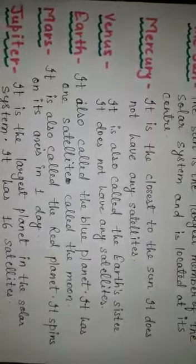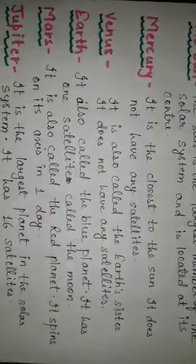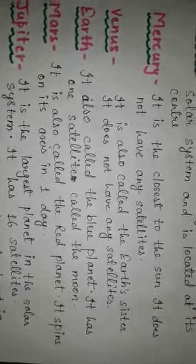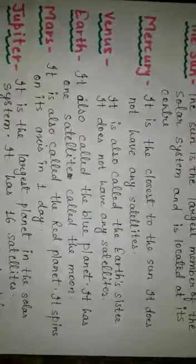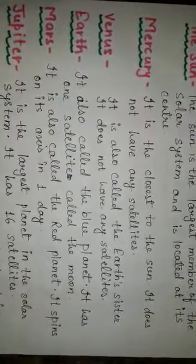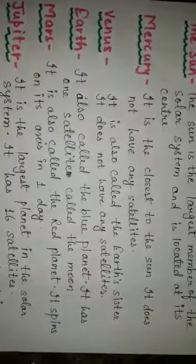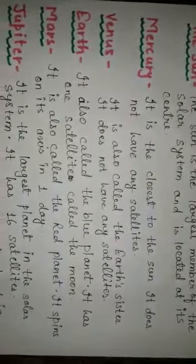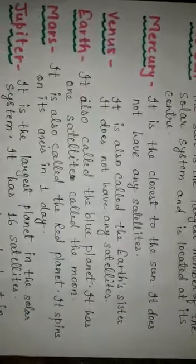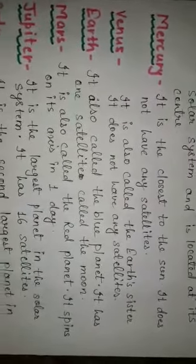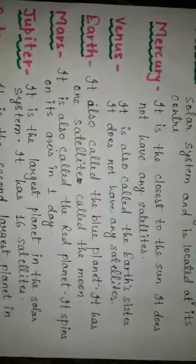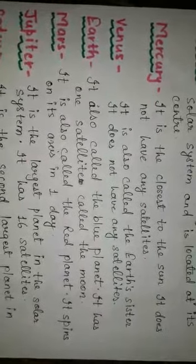Next topic: Earth. It is also called the blue planet because three-fourths of its surface is covered with water. It has one satellite called the moon. It takes 365 days and 6 hours to complete one revolution around the sun, and 24 hours to complete one rotation on its axis. It is a unique planet of the solar system because it provides favorable conditions for the existence of life.